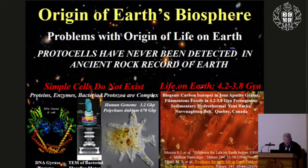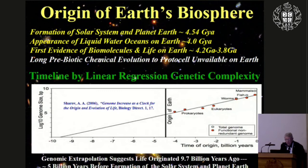From the fossil record, life on Earth began somewhere between 3.8 and 4.2 billion years ago. Sharov's study of linear regression of genetic complexity concluded that the origin of life may have occurred as far back as 9 to 9.5 billion years ago. This is a significant problem because the solar system and planet Earth formed about 4.54 billion years ago, and the first liquid water oceans on Earth appeared around 4 billion years ago.